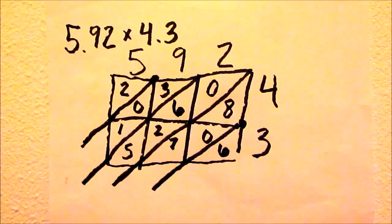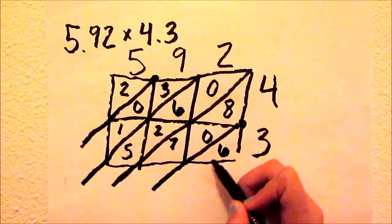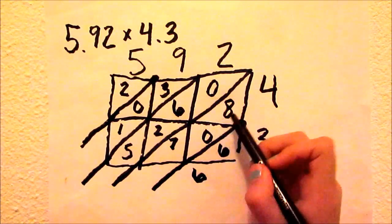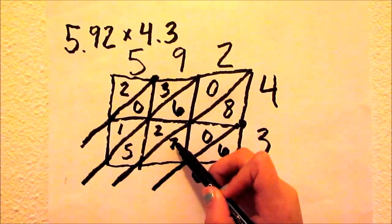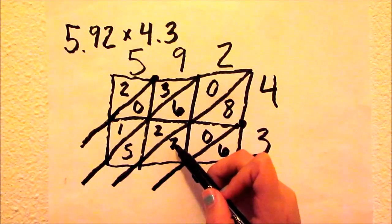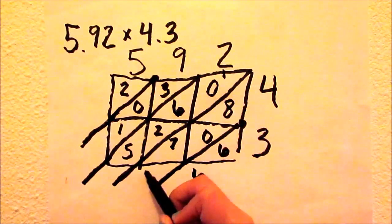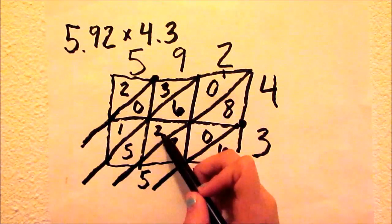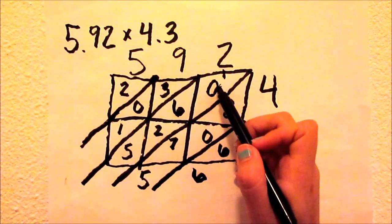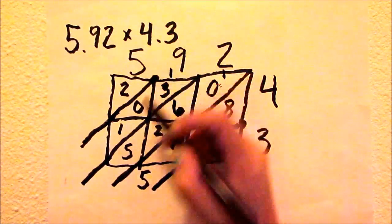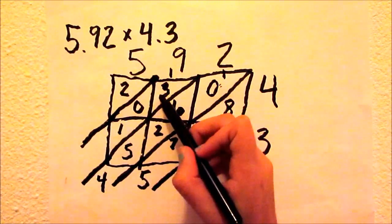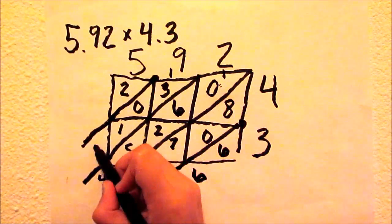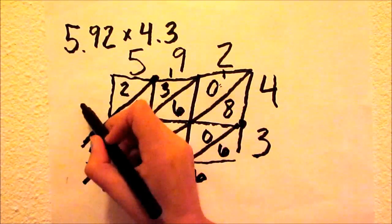Now we add down the diagonal stripes. We have 6 within this stripe. 8 plus 7 will give us 15. We carry over the 1 and we write down the 5. 6 plus 5 is 11 plus 2 and 1 gives us 14. We carry over the 1 and write down the 4. 3 plus 1 is 4 plus another 1 is 5. And then we carry down the 2.